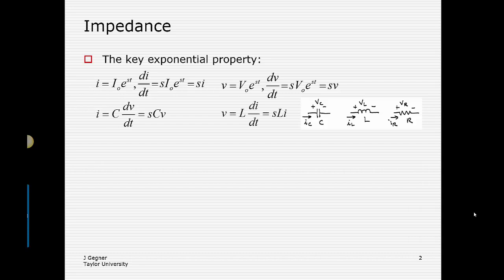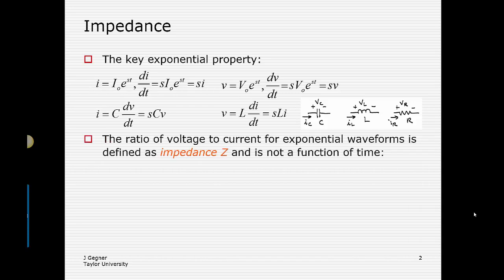The same thing is true for the inductor. For the inductor, V equals L di/dt. When we assume that I is constrained to an e to the st form, we get the current scaled by sL. And so we define the ratio of the voltage to the current — just like Ohm's Law — as impedance. But it is restricted to the case where the waveforms are of an exponential e to the st form.